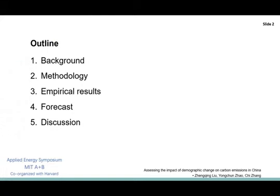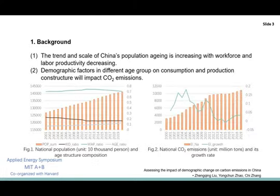This report is divided into five segments. In the first part of the report, we are going to begin with an influencing mechanism about population in different age groups on carbon emissions. Please look at Figure 1.